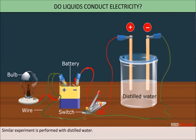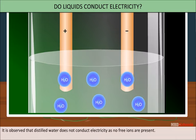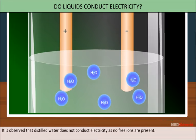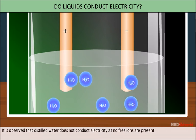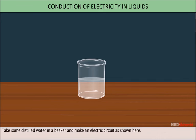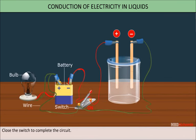A similar experiment is performed with distilled water. You will observe that distilled water does not conduct electricity due to the absence of free ions. Take some distilled water in a beaker and make an electric circuit as shown here. Switch the bulb on. The bulb does not glow.